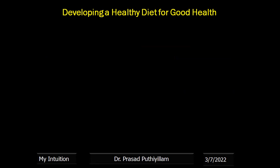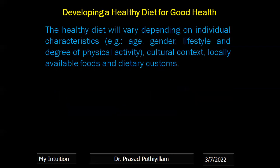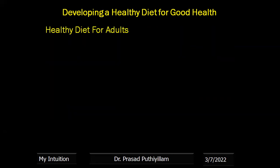A healthy diet will vary depending on individual characteristics like age, gender, lifestyle, degree of physical activity, and also depending on cultural context, locally available foods, and dietary customs. However, the basic principles of what constitutes a healthy diet remain the same. Therefore, we can discuss a healthy diet for adults.